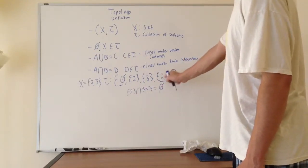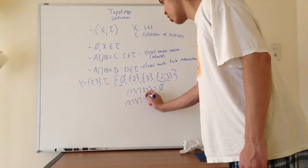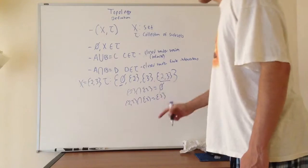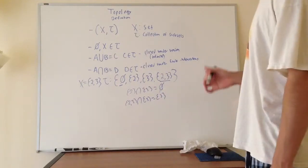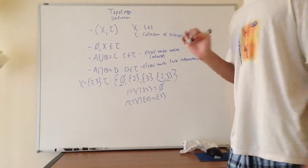And the intersection of {2,3}, if we take the intersection of that with 3, we're just going to get 3, and that's there. And you can do the same thing with 2. And so we can see now that all our conditions for topology have been satisfied. And that really is all it boils down to.